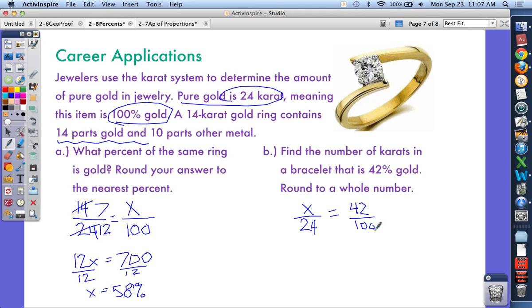Cross-multiply and solve this. If you wanted, you could reduce these down, but you don't have to. You'll end up with 10.08, but it says round to the nearest whole number, so it's about 10 carats. If you have any questions here, pause, look over it, ask about it in class or 7th period.